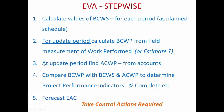At the same update period, find actual cost of work performed (ACWP) from the accounts. These then give the basic parameters for earned value analysis. Compare BCWP with BCWS and ACWP to determine the project performance indicators and the percentage complete of the project.